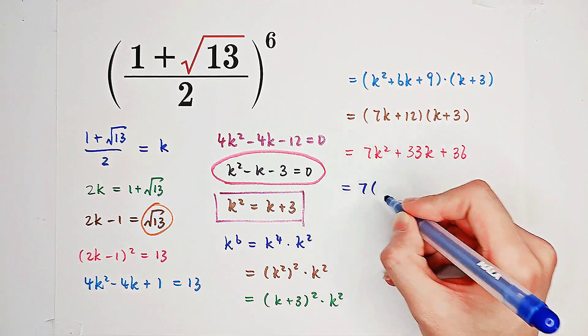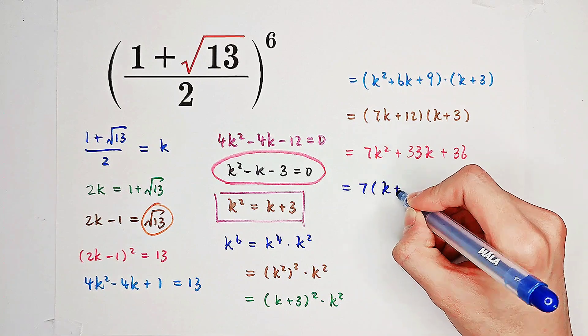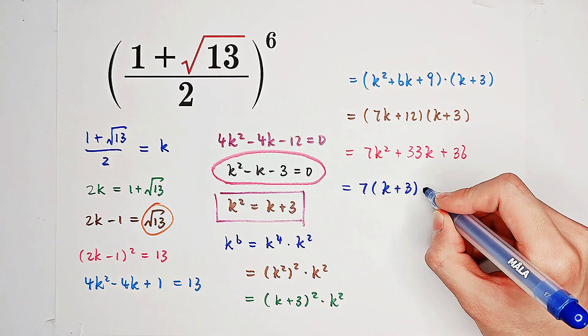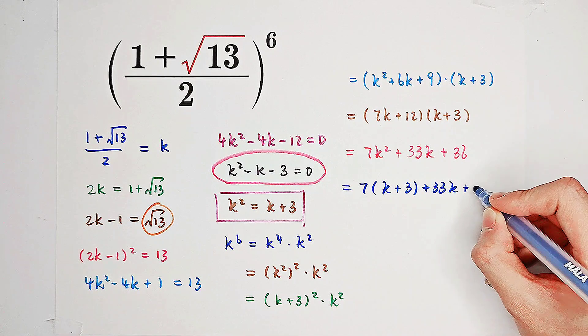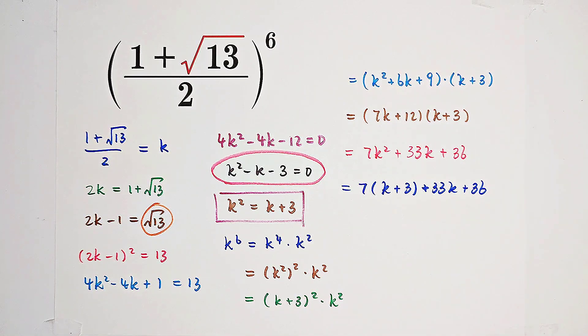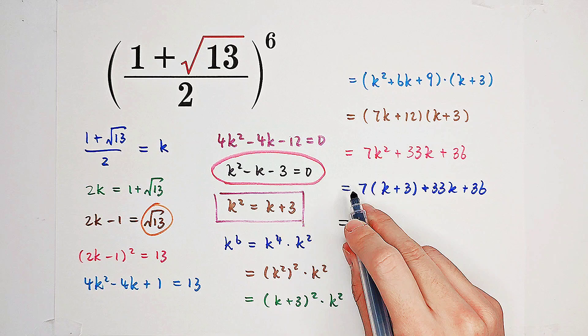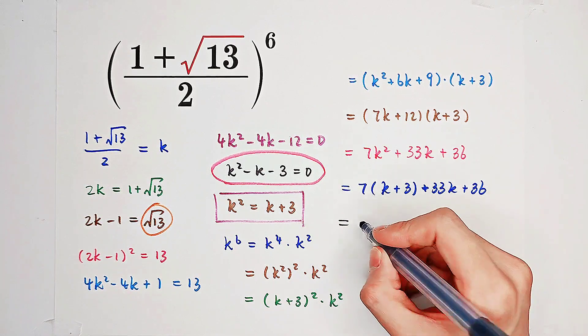And then, again, k squared is k plus 3. So it is 7 times k plus 3 plus 33k plus 36. And then, it is just 7k plus 33k, which is 40k plus 57.